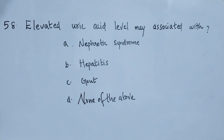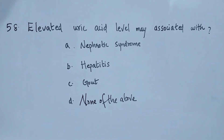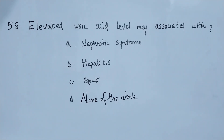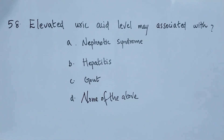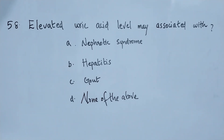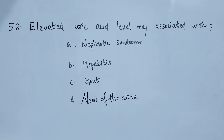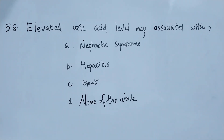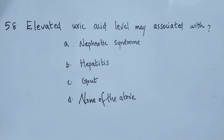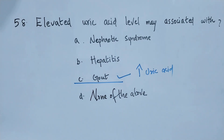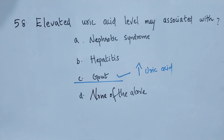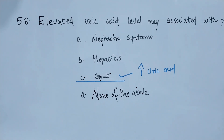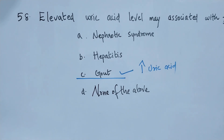Question number 58. Elevated uric acid level may be associated with: option A nephrotic syndrome, option B hepatitis, option C gout, option D none of the above. The right answer is option C, gout. Uric acid will be high in the condition of gout.